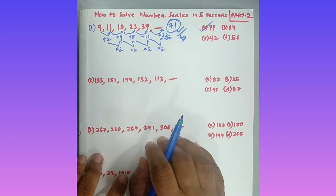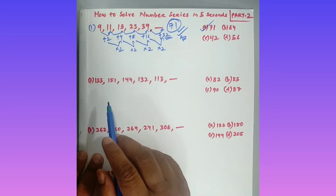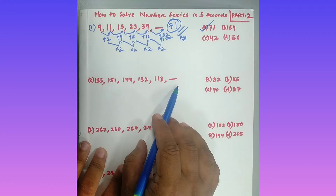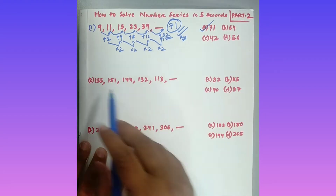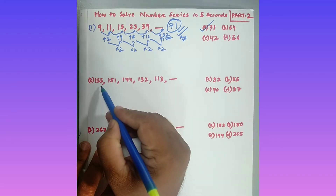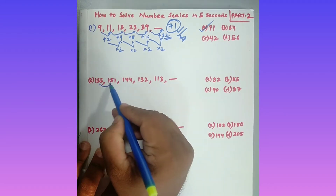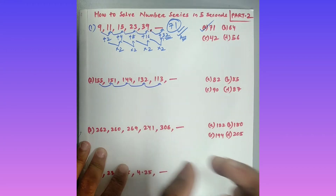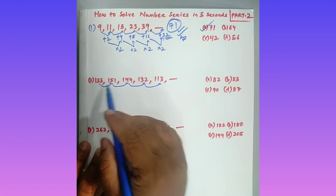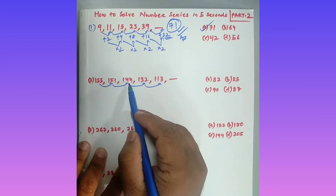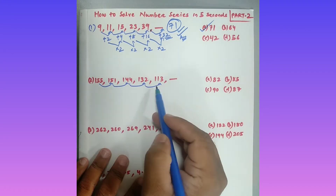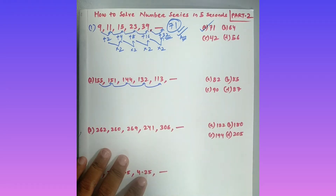Now move on to question number two: 155, 151, 144, 132, 113, dash. These are the options given. In this question, the numbers are already in decreasing order — descending order. The gap between two numbers is a small difference: 155 to 151 small gap, 151 to 144 small gap, 144 to 132 small gap. Since numbers are in decreasing order with a small gap, you apply subtraction logic.